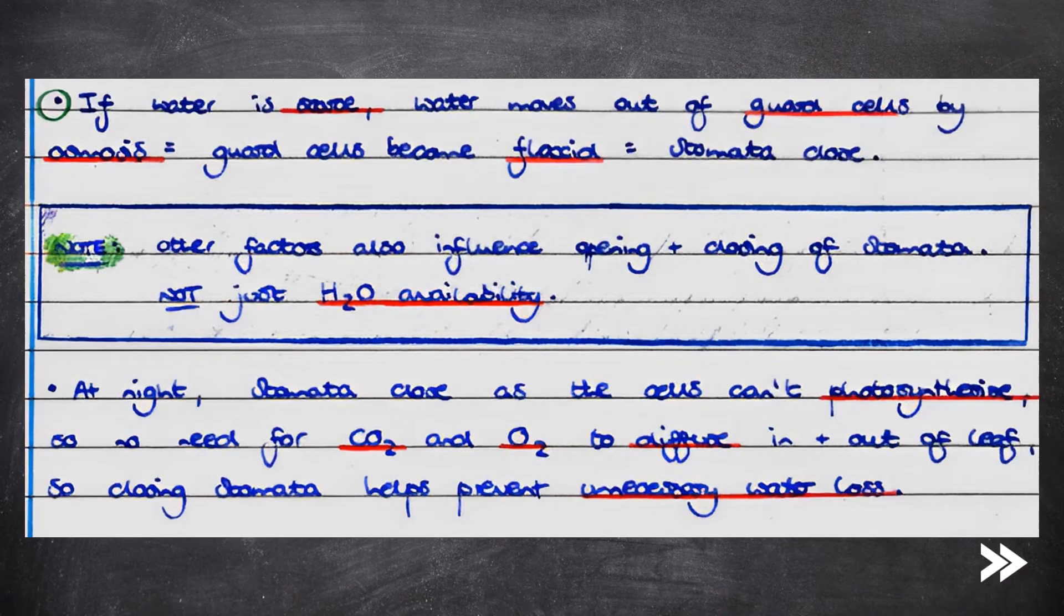If water is scarce the opposite happens. Water moves out of the guard cells by osmosis, the guard cells become flaccid which means that they shrink back again and the stomata close. Note that at night the stomata close as the cells cannot photosynthesize, so there's no need for carbon dioxide and oxygen to diffuse into and out of the leaf, and therefore closing the stomata helps prevent unnecessary water loss.